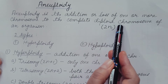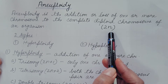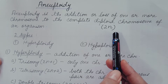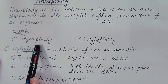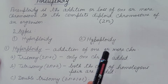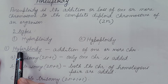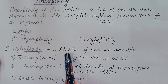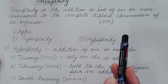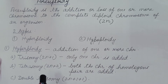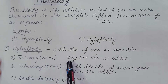Diploid chromosome means 2n. When one or more chromosomes are added to or lost from this 2n number, it is known as aneuploidy. There are two types of aneuploidy: hyperploidy and hypoploidy. Hyperploidy — as the name suggests, hyper means more — is the addition of one or more chromosomes to the diploid genome. Depending upon how many chromosomes are added, it is of the following types. First is trisomy, written as 2n+1, meaning only one chromosome is added.